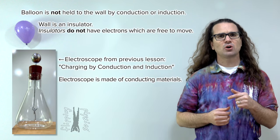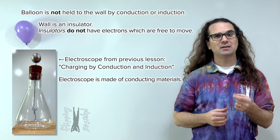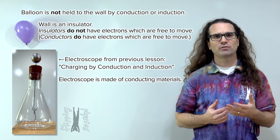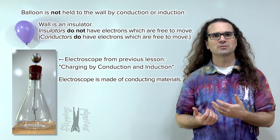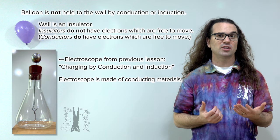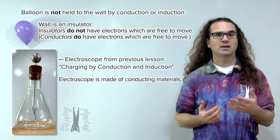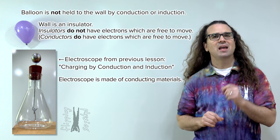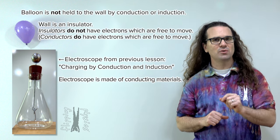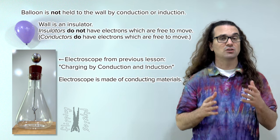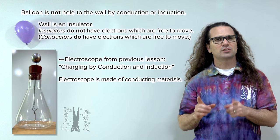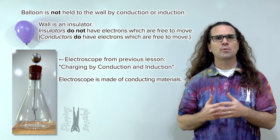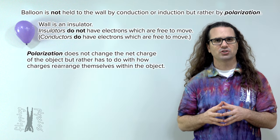In our previous lesson, the electroscope was made of metal, which is a conductor. Conductors have many electrons which are free to move around. That is why we were able to charge the electroscope via conduction and induction. The wall is an insulator and insulators do not have many electrons which are free to move. In fact, what we are doing here does not change the net charge of the wall. What we are doing is called polarization.